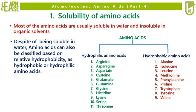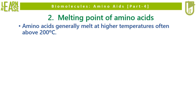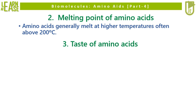The second property of amino acids is melting point, which suggests that all amino acids generally melt at higher temperatures, often above 200 degrees Celsius. The third property is taste of amino acids.